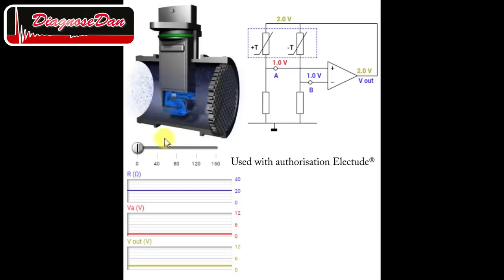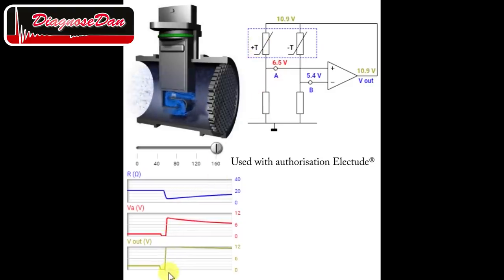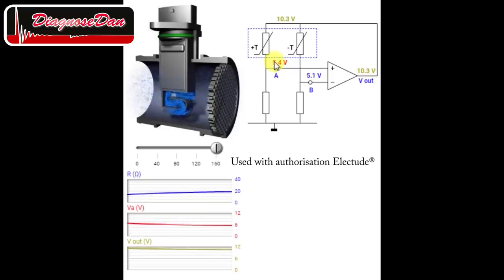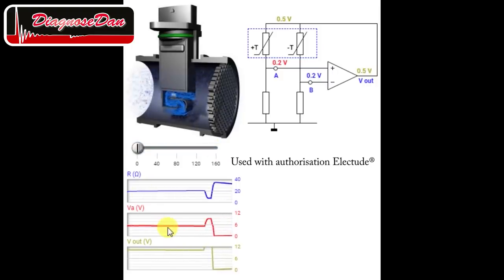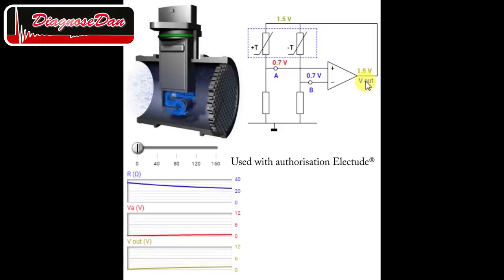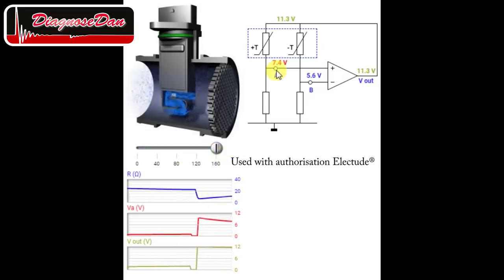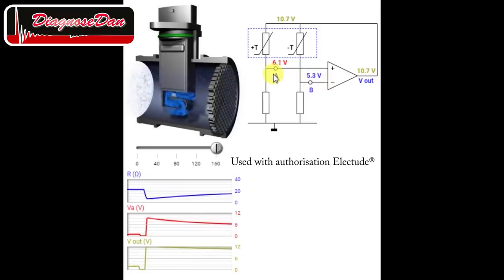Now let's try it — let's go to maximum airflow. Maximum airflow: resistance goes down, voltage at point A goes up, and the output voltage of the amplifier also goes up. After a while, voltage at point A and point B equalize again because the element heats back up due to the higher voltage. Now let's go down again and we will see the opposite: resistance goes up, voltage goes down, output voltage goes down, and A and B equalize again. The moral of the story is: the higher the airflow, the higher the output voltage.